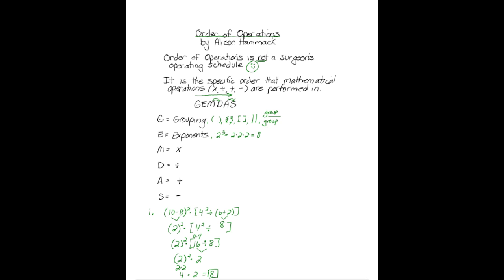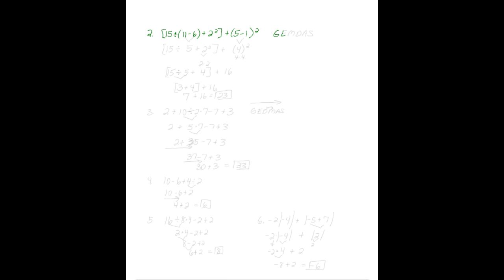Looking at example number 2, we want to do our grouping first, GEMDAS. Grouping comes first. 11 minus 6 is 5, and 5 minus 1 is 4. Let's rewrite our problem. We have 15 divided by 5 plus 2 squared in brackets, plus 4 squared.